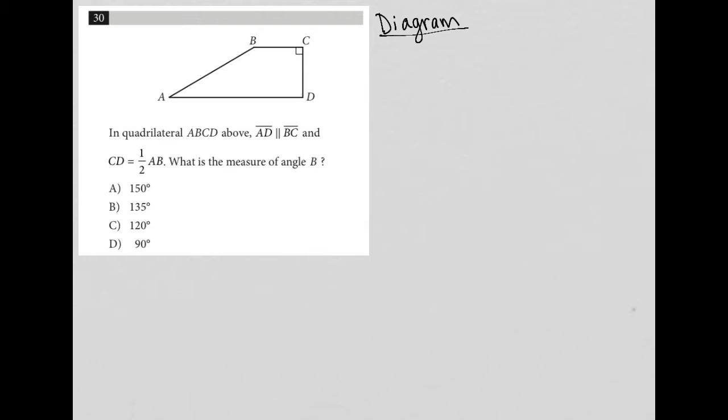Let's see what we're given about this diagram. We're told in quadrilateral ABCD above, line segment AD is parallel to line segment BC. So I'm going to draw these little symbols here, these little arrowheads that represent that those two lines are parallel.